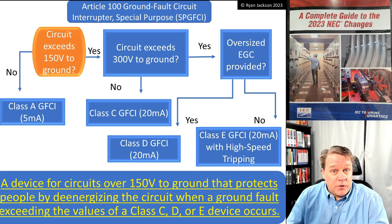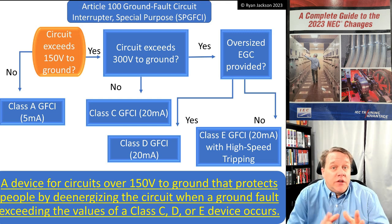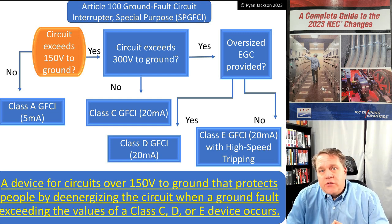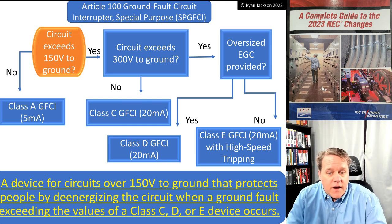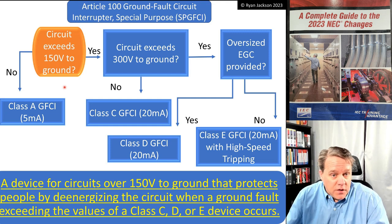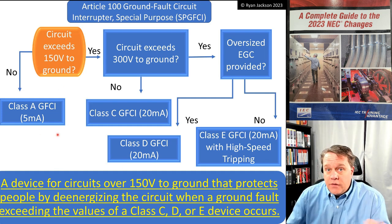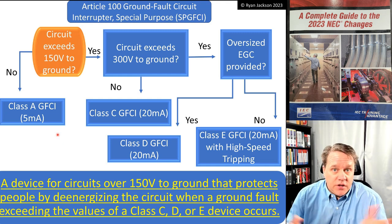We're going to call Class C, D, and E devices special purpose GFCIs. Looking at the definition first: a special purpose GFCI is a device for circuits exceeding 150 volts to ground that protects people by de-energizing the circuit when a ground fault exceeding the values of a Class C, D, or E device occurs. On my flowchart — does the circuit exceed 150 volts to ground? If not, you use a Class A GFCI.